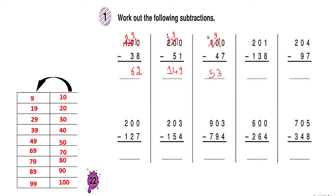Here we have 100 minus 47. The final answer is 53. We borrowed 1 from the hundreds to put it in the tens, making it 10. We cross it again — it becomes 9 — and put the 1 in the units to get 10. 10 minus 7 is 3, 9 minus 4 is 5, and 0 minus 0 is 0. So to summarize: the first answer is 62, the second is 149, and the third is 53.